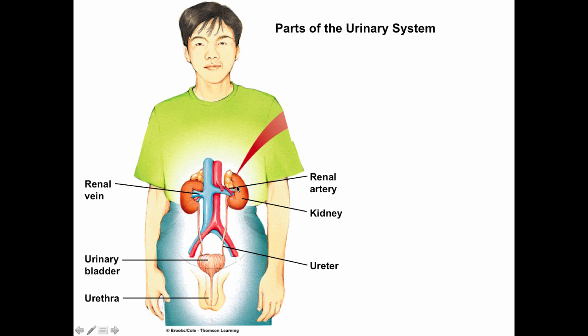The kidneys receive a pretty healthy percentage of cardiac output — there is a high renal blood flow at all times. The kidneys receive blood via the renal artery, which branches off the abdominal aorta. That blood gets filtered, and the newly filtered blood leaves through the renal vein, which drains into the abdominal vena cava and moves back to the heart, then to the lungs, and back to the rest of the body.